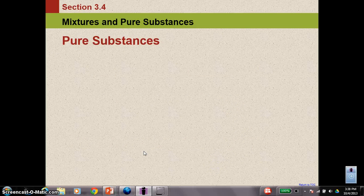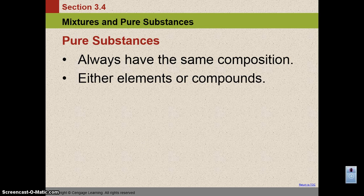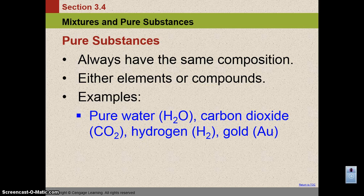Now we're going to look at the difference between mixtures and pure substances. Pure substances, by definition, always have the same composition. They are either made up of elements or of compounds, which are made up of elements. And some examples for you to remember are pure water, carbon dioxide, hydrogen, and gold.